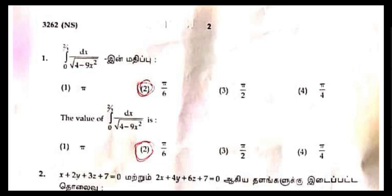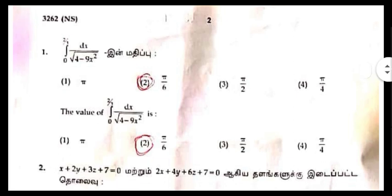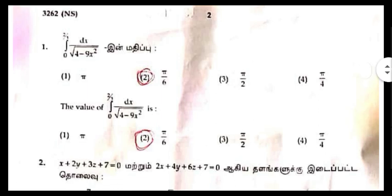For example, you will see one mark. If you want to see one mark, you will see the original question paper. One mark question paper — there is a link in the description. If you want to see one mark for physics, chemistry, one mark, you will see the bell button.